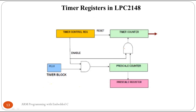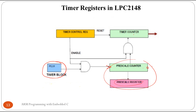The block diagram shows the peripheral clock feeding into the prescaler counter, which compares its count with the prescaler register. When they match, the timer counter is incremented. If the prescaler register is set to zero, the peripheral clock is fed directly to the timer counter, incrementing it every clock pulse. The timer counter is also connected to the timer control register, which performs actions when the timer counter matches the match register.